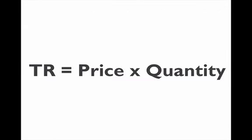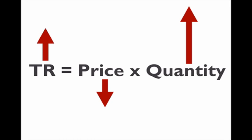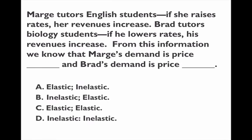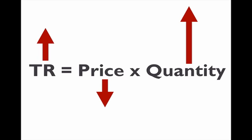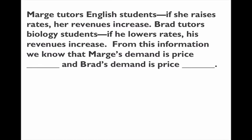Total revenue is price times quantity. When the price goes down, quantity goes up. If quantity goes up by more than the price fell — elastic demand — total revenue increases, because the positive quantity effect outweighs the negative price effect. This is shown visually: the quantity arrow is larger than the price arrow. When you reduce your price, you gain a lot of sales and your revenue goes up.